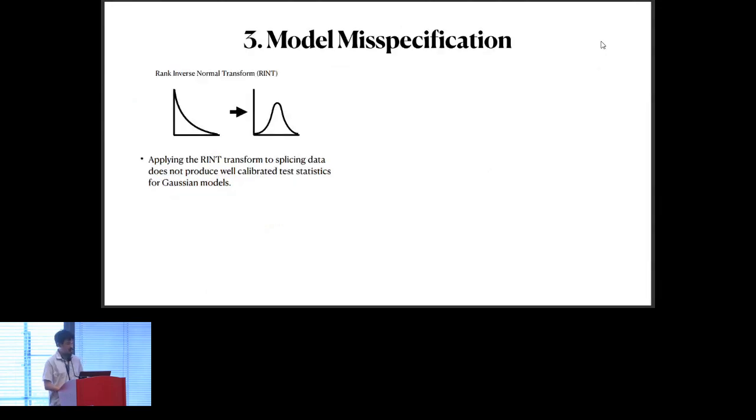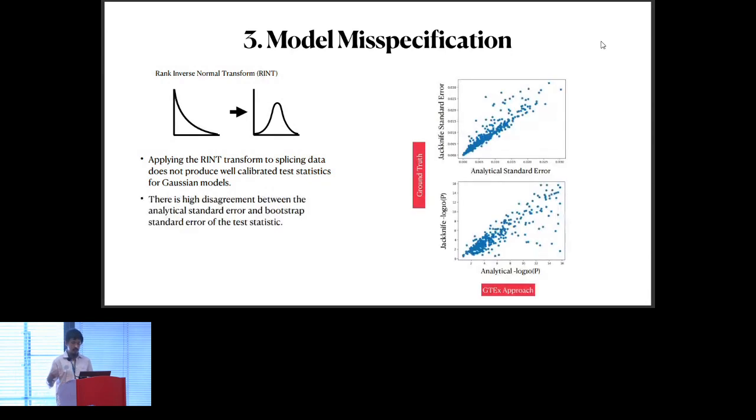The third thing is model misspecification. When you apply these models that were adapted from EQTL methods, they're basically just linear regression models that perform some kind of transformation on the phenotype. This phenotype transformation that's typically done in the field is what's called a rank inverse normal transform, which is basically when you take a skewed distribution like that and you force it into this Gaussian shape to meet the assumptions of your linear regression model. What we observe here is that this transformation doesn't actually help with anything.